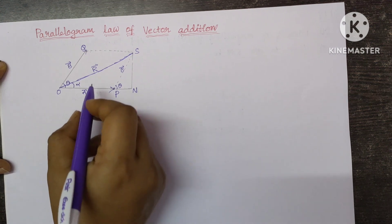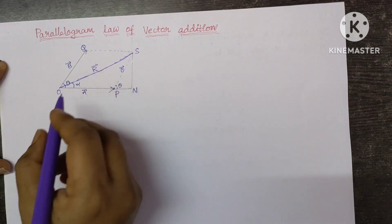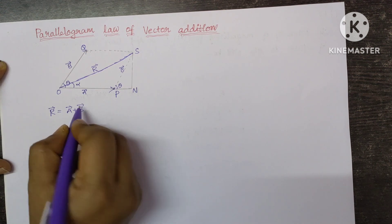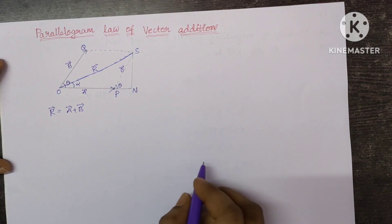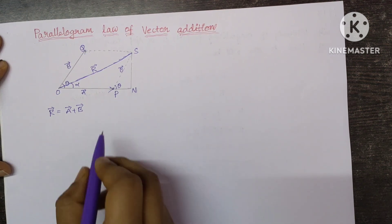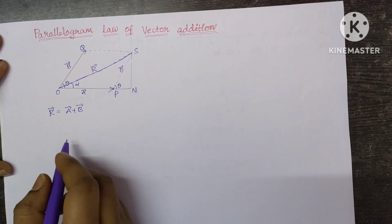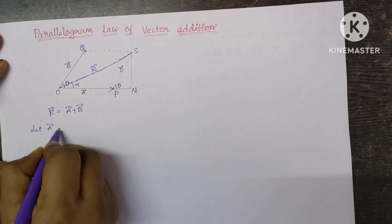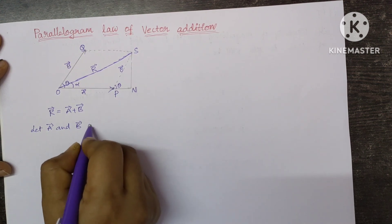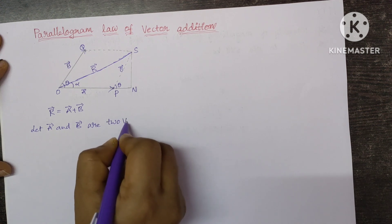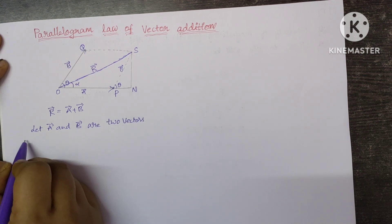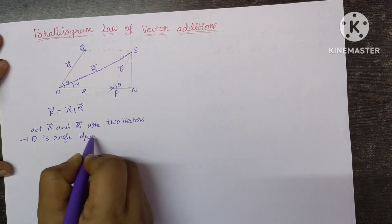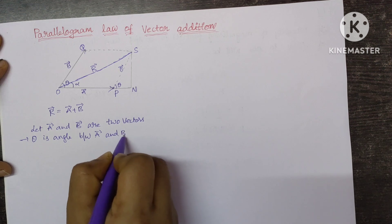So now we are going to find the magnitude and the direction of this resultant vector. We know that R bar is equal to A bar plus B bar. We will find the magnitude and direction of the resultant vector using the Parallelogram Law of Vector Addition. Here A bar and B bar are two vectors, and theta is the angle between A bar and B bar.